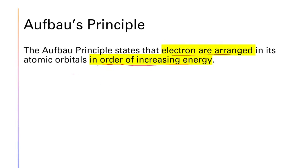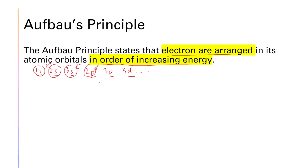We have previously studied orbitals: s orbital, p orbital, d orbital. There are orbitals 1s, 2s, 3s, and also 2p, 3p, 3d, and so on — these are all called atomic orbitals. We need to know their relative energies because the Aufbau principle states that electrons must fill the lower energy orbitals first.